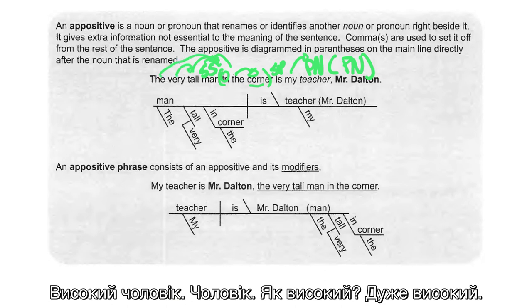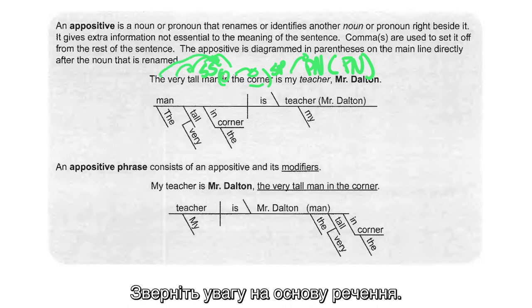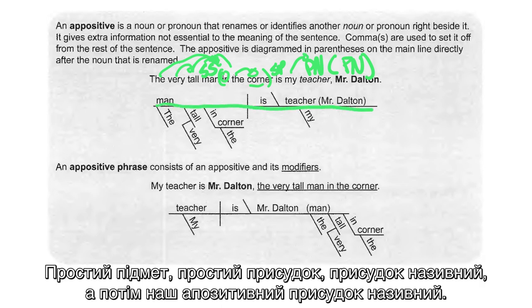How tall? Very tall. Notice the sentence base: simple subject, simple predicate, predicate nominative, and then our appositive — which is also the predicate nominative, Mr. Dalton.